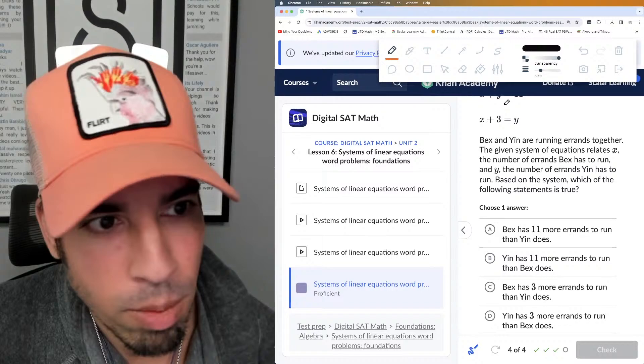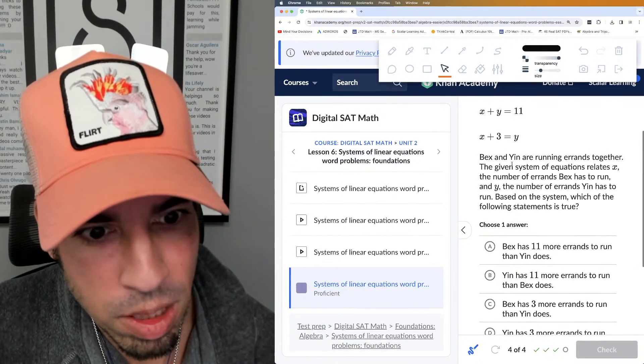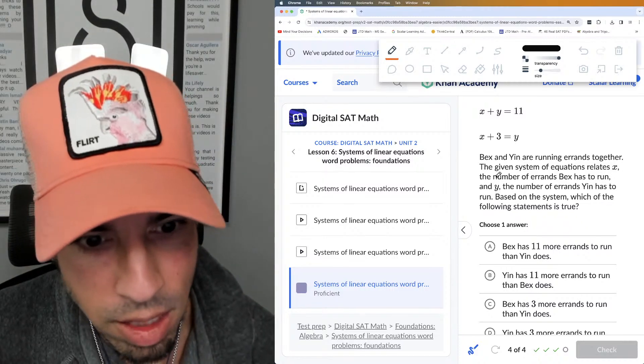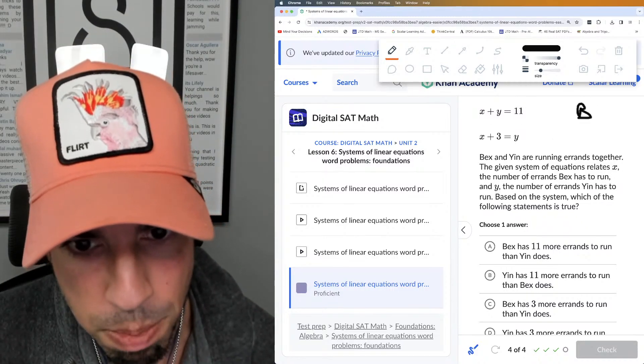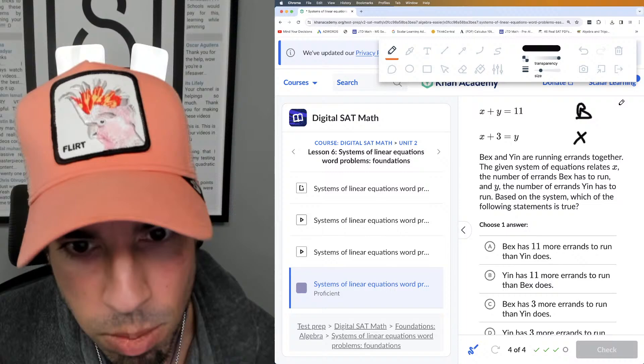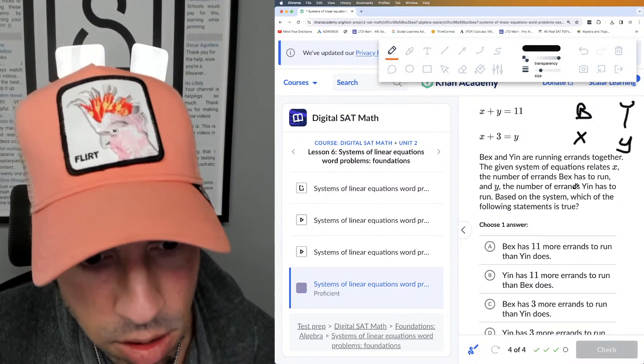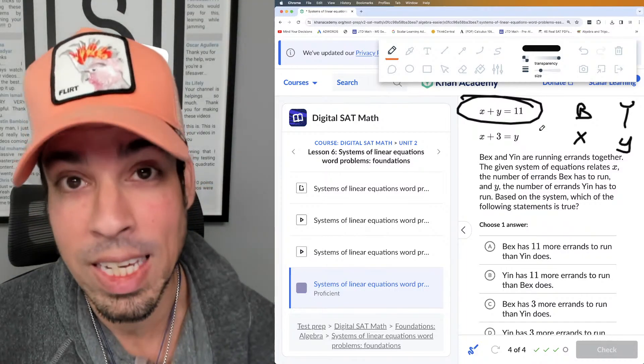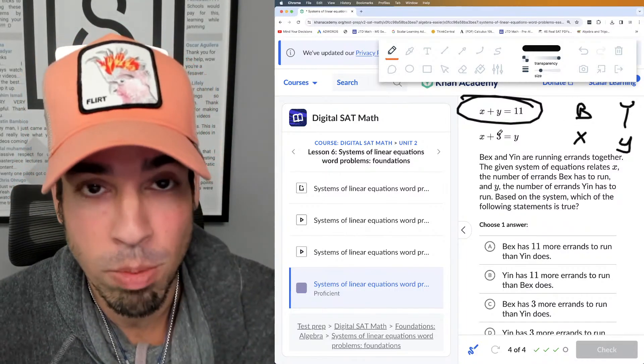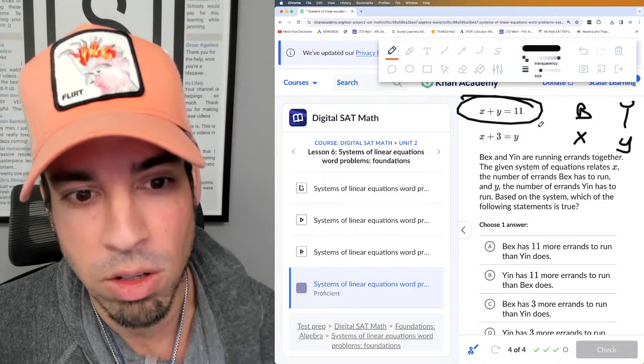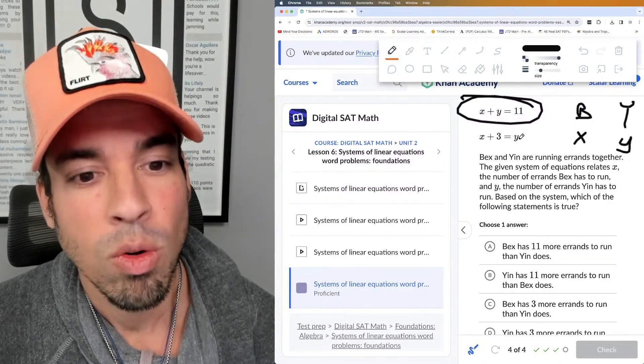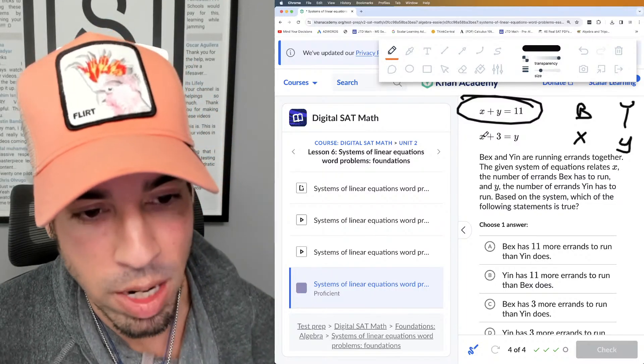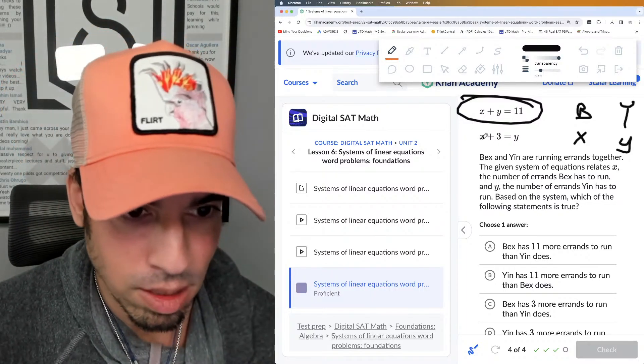All right, last one. Here we go, ladies and gentlemen. And we got our system up here. Ben and Yin are running errands together. The given system of equations relates x, the number of errands Bex has to run, and y, the number of errands Yin has. Based on the system, which of the following statements are true? So this tells me the two together—and I'm just going to interpret it quickly before we look at the choices—the two together have 11 errands, and then this one is Yin has three more than Bex, right?